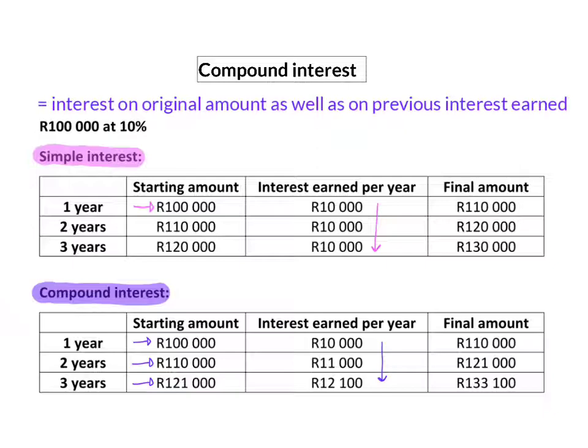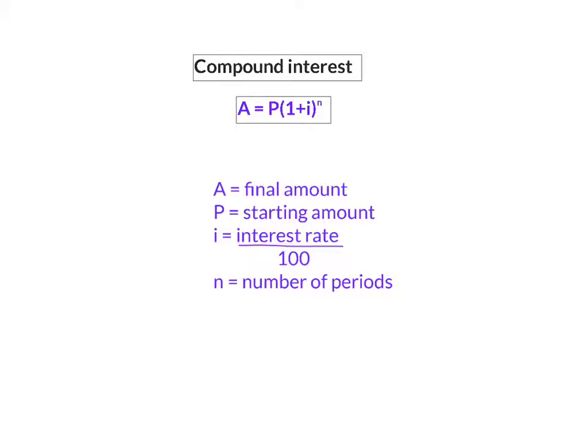For compound interest there's also a formula you can use to calculate the A value or final amount. A reminder that A, the final amount, consists of your starting amount or P and all the interest earned.